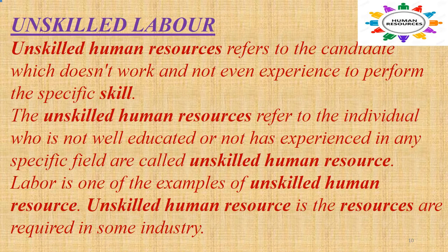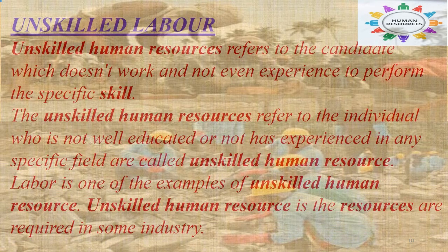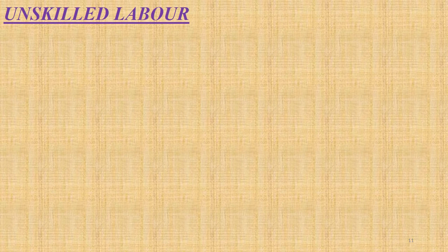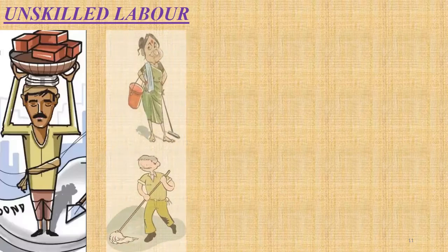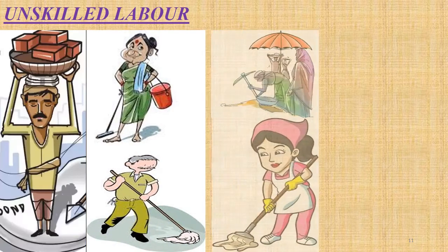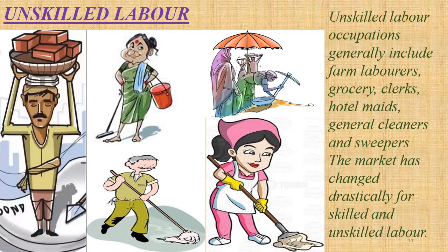Unskilled labor does not require workers to have special training or skills. Unskilled labor occupations are constantly shrinking due to technological and societal advances. Jobs that require little or no training now require training. For example, labor that was once done manually may now be assisted by computers or other technology, requiring the workers to have technical skills. Examples of remaining unskilled labor occupations generally include farm laborers, grocery clerks, hotel maids, general cleaners and sweepers.